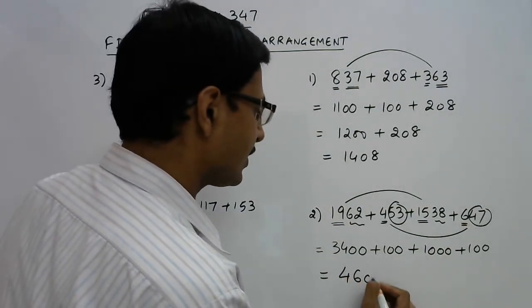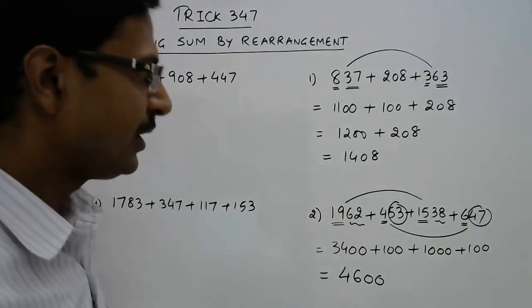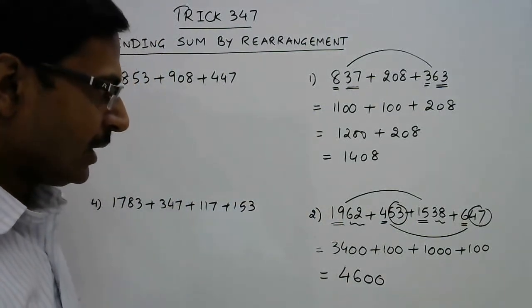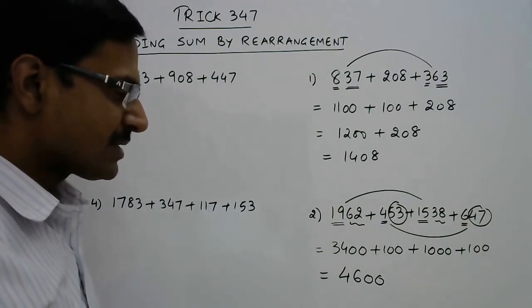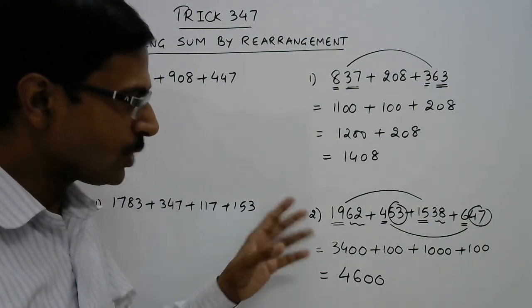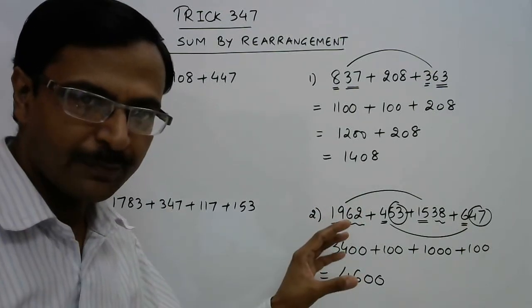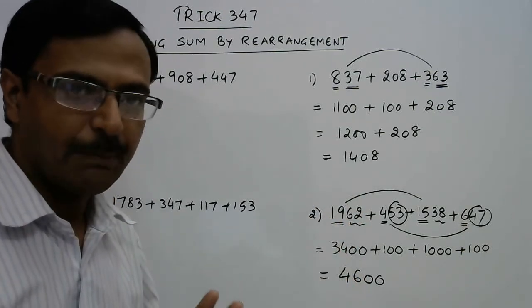I must tell you that there may be two, three, five, or six numbers in the simplification problem, but pairing is very important. The numbers which are paired are to be added first.